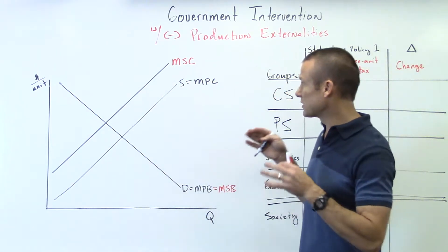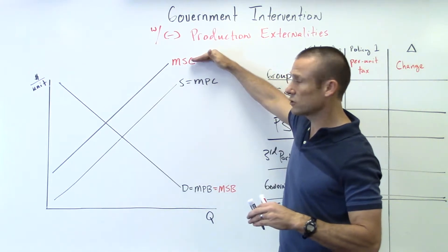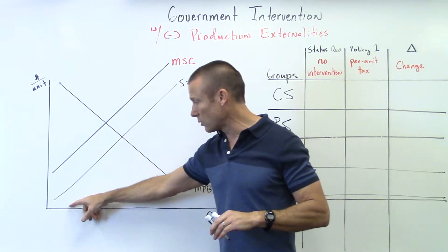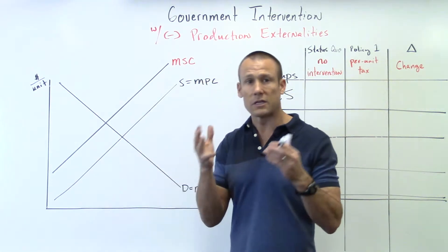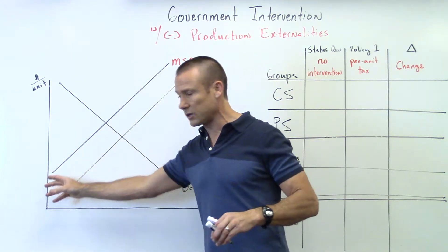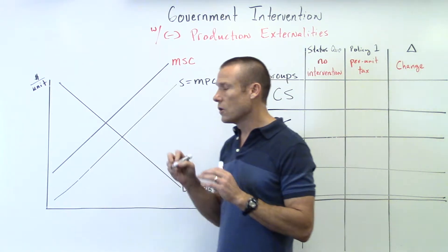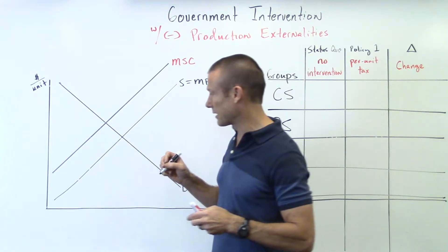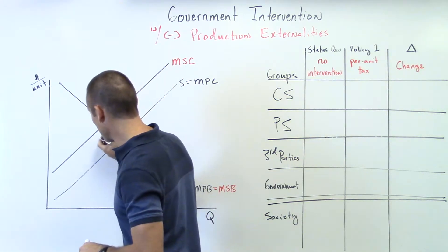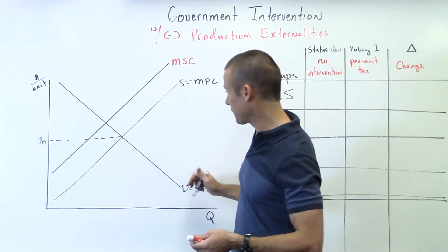Here's our graph. We've got a negative production externality. When that is the case, the marginal social cost — otherwise known as the marginal total cost — is above the marginal private cost curve, because we don't just have the per unit costs the producer is incurring; we've got an additional third party cost. So the marginal social cost curve takes into account both the marginal private cost and the third party cost.